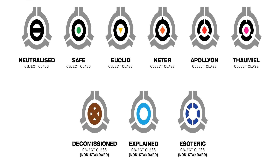All anomalous objects, entities, and phenomena requiring special containment procedures are assigned an object class. An object class is part of the standard SCP template and serves as a rough indicator for how difficult an object is to contain. In universe, object classes are for the purposes of identifying containment needs, research priority, budgeting, and other considerations. An SCP's object class is determined by a number of factors, but the most important are the difficulty and the purpose of its containment.